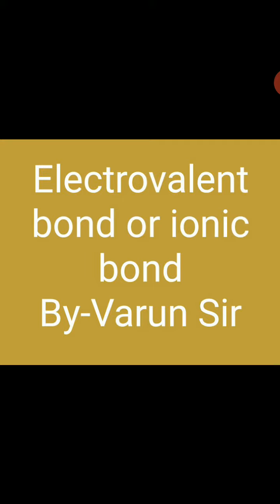इस bond में एक atom electron को देता है और दूसरा atom electron को लेता है। इस आदान-प्रदान से जो bond बनेगा वो electrovalent bond और ionic bond कहलाएगा। Clear — समझ में आ गया?